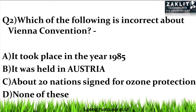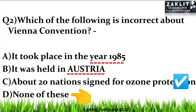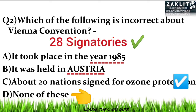The second question was: which of the following is incorrect about the Vienna Convention? The correct option is option D, because all three of the other options are correct. The Vienna Convention took place in 1985 in Vienna, Austria, and about 20 nations signed for ozone protection. Those who selected option C are also given marks, as actually 28 nations signed for the Vienna Convention.